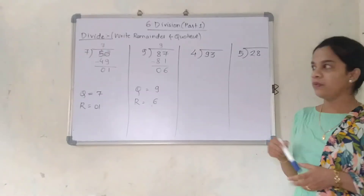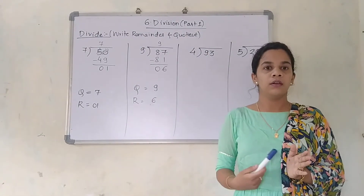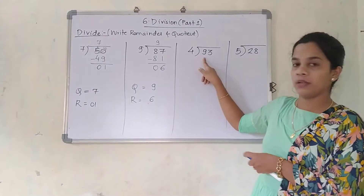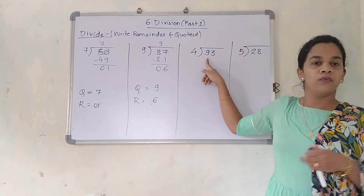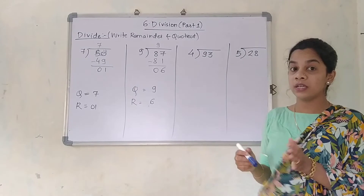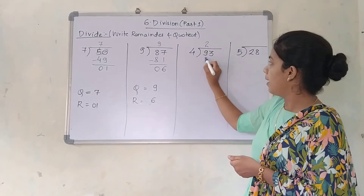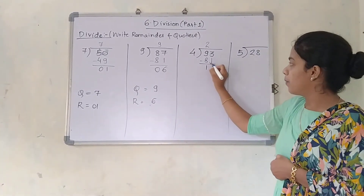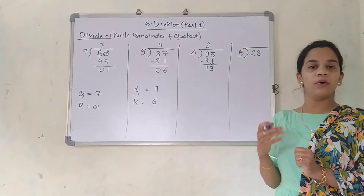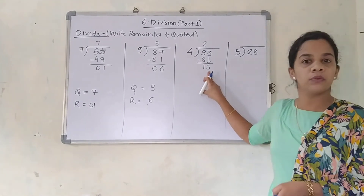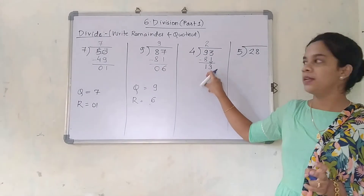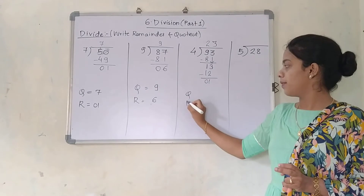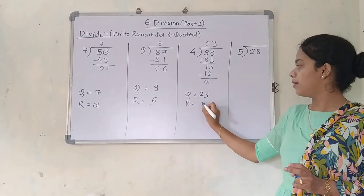The next question is 93 divided by 4. This number is more than 4 tens are 40. So we hold only one number in our mind — that is 9. 4 twos are 8, which is literally near to 9. So 4 twos are 8. 9 minus 8 is 1. This 3 is going to come down, giving 13. We say the table till we get near 13: 4 ones are 4, 4 twos are 8, 4 threes are 12. The remainder is 1. The quotient is 23 and the remainder is 1.